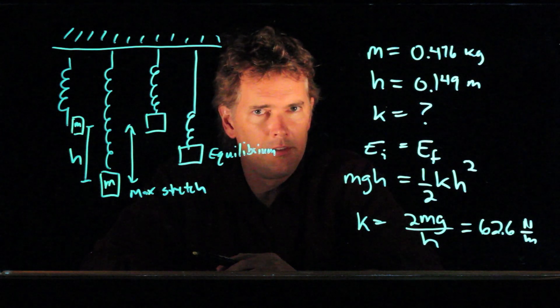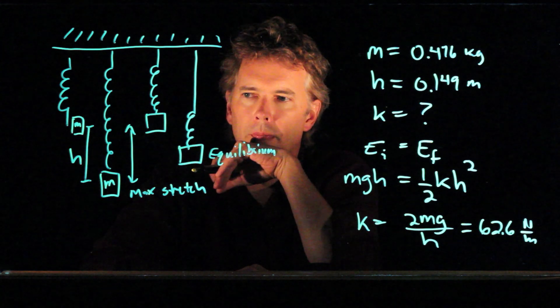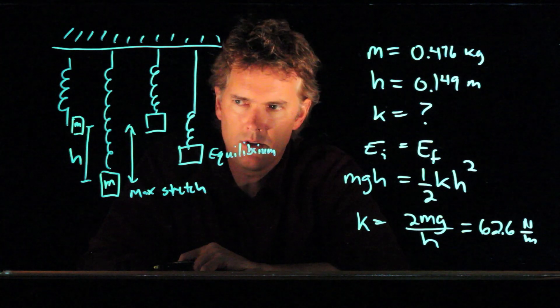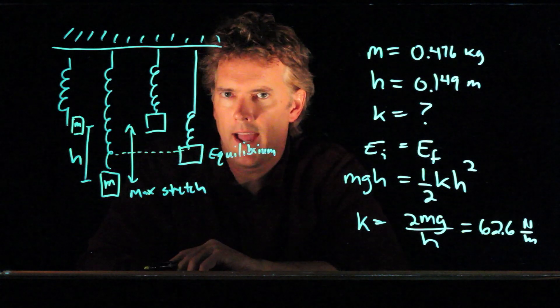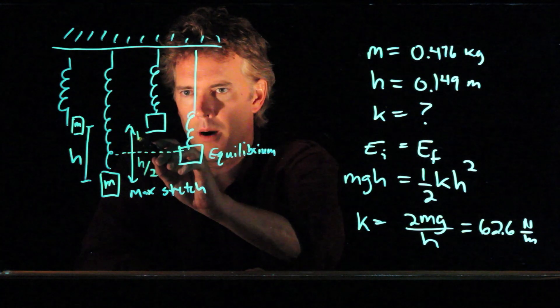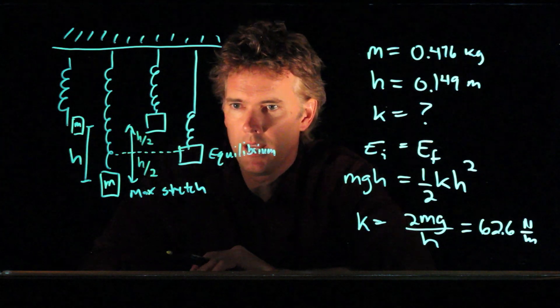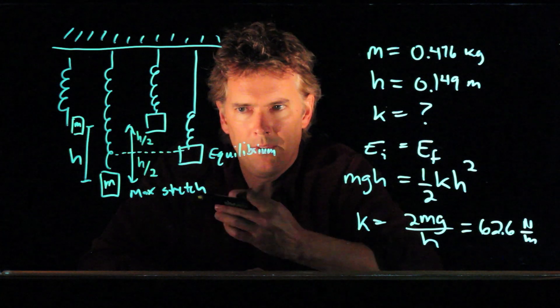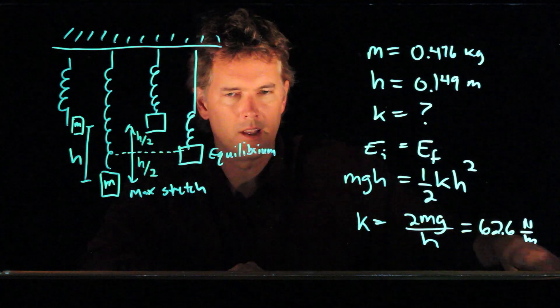Now, how does this jive with this business of equilibrium position? If we drop a distance h, then this position right here is halfway between. We went down h over 2 from it. We went up h over 2 from it. And so the equilibrium position is directly at h over 2. So would we get the same answer for k if instead we solved the force equation? Let's take a look.